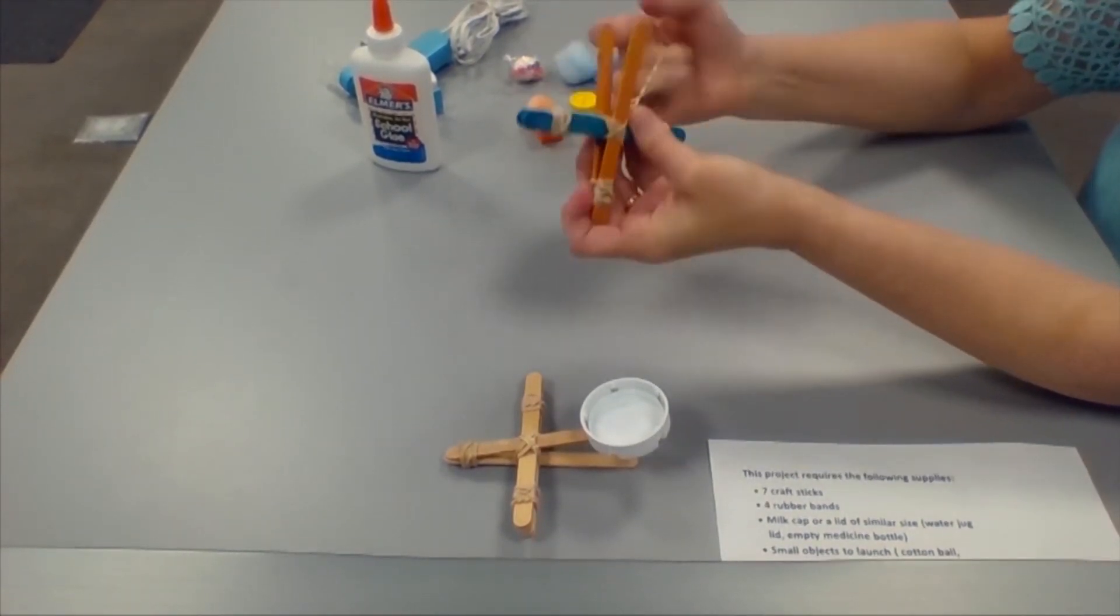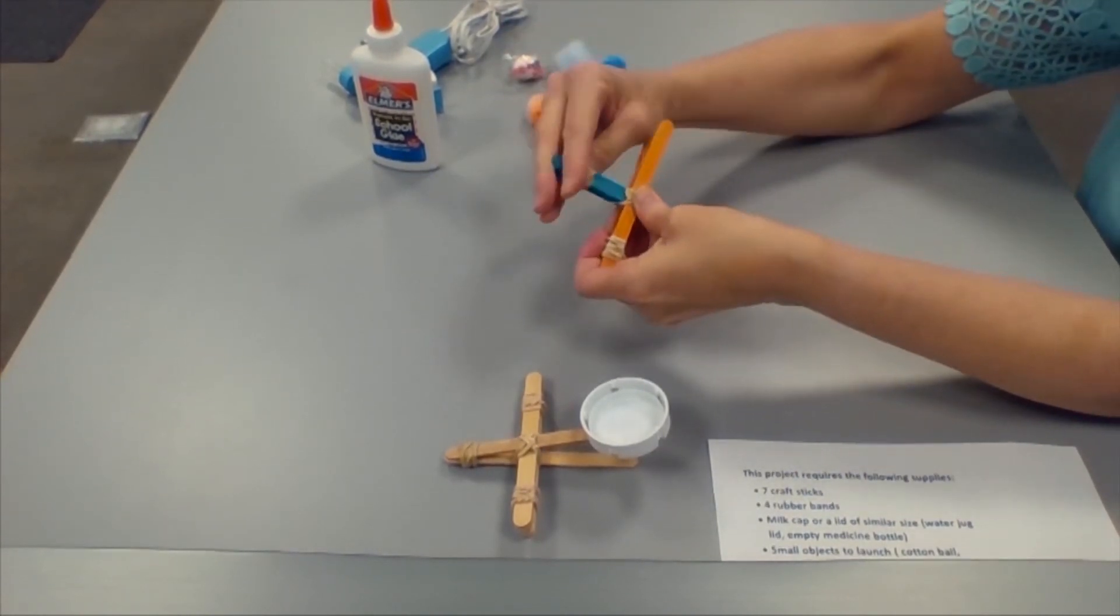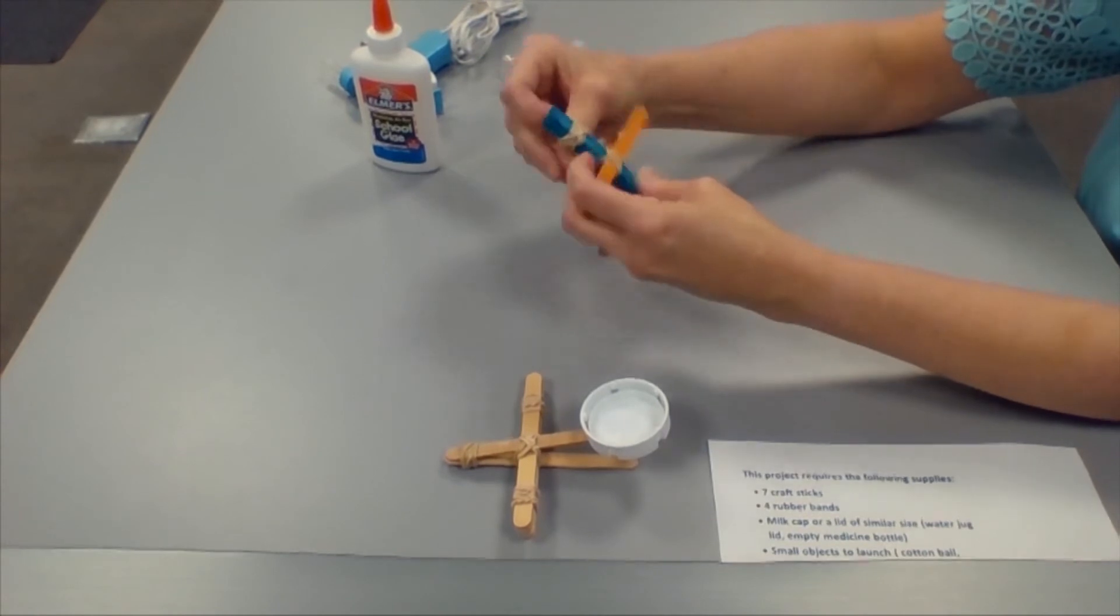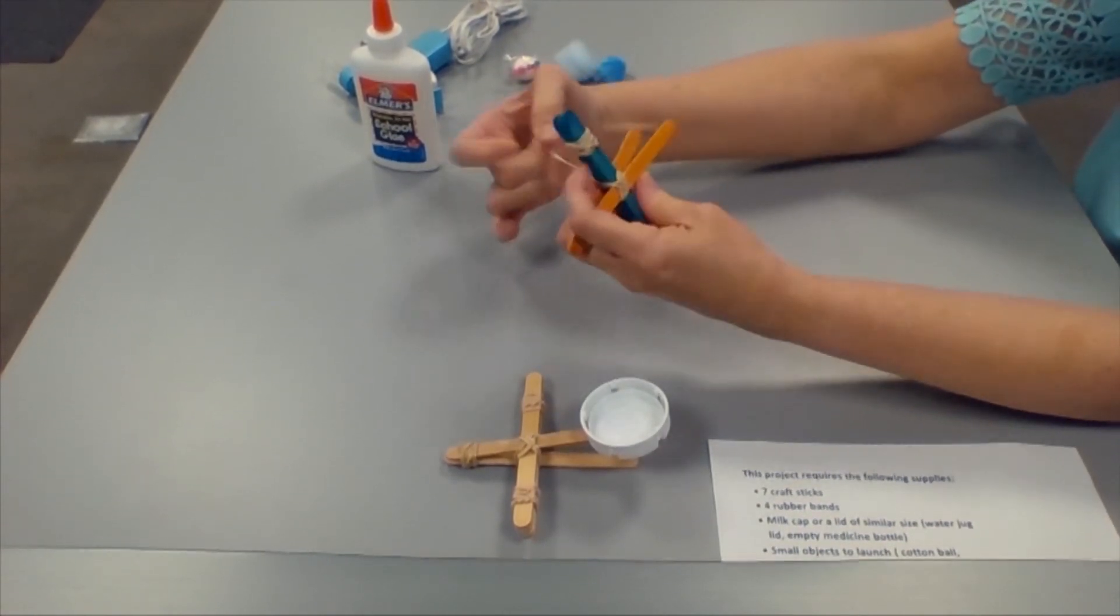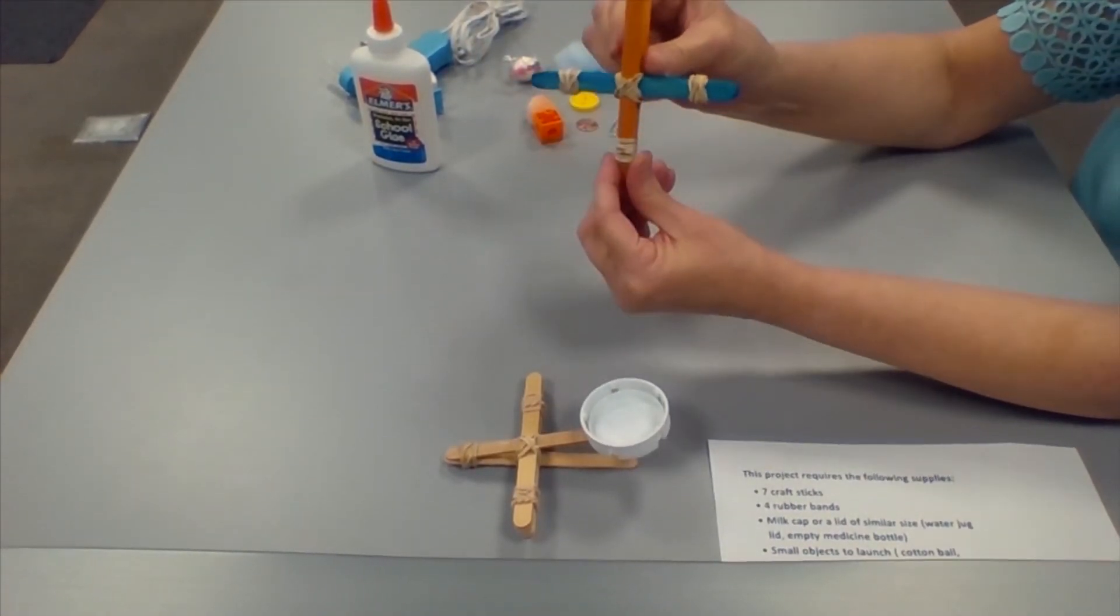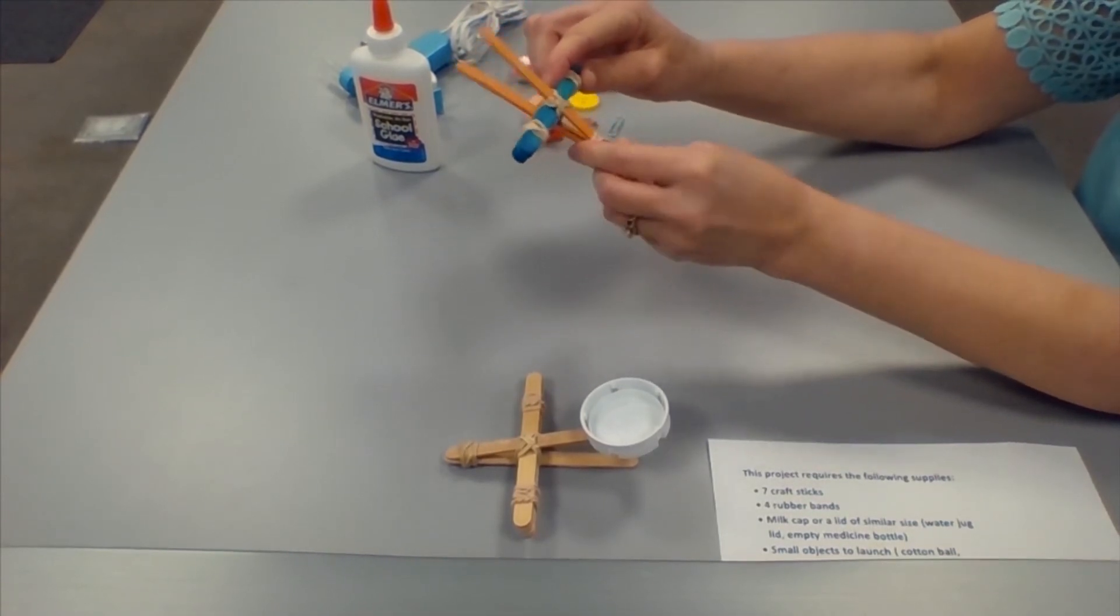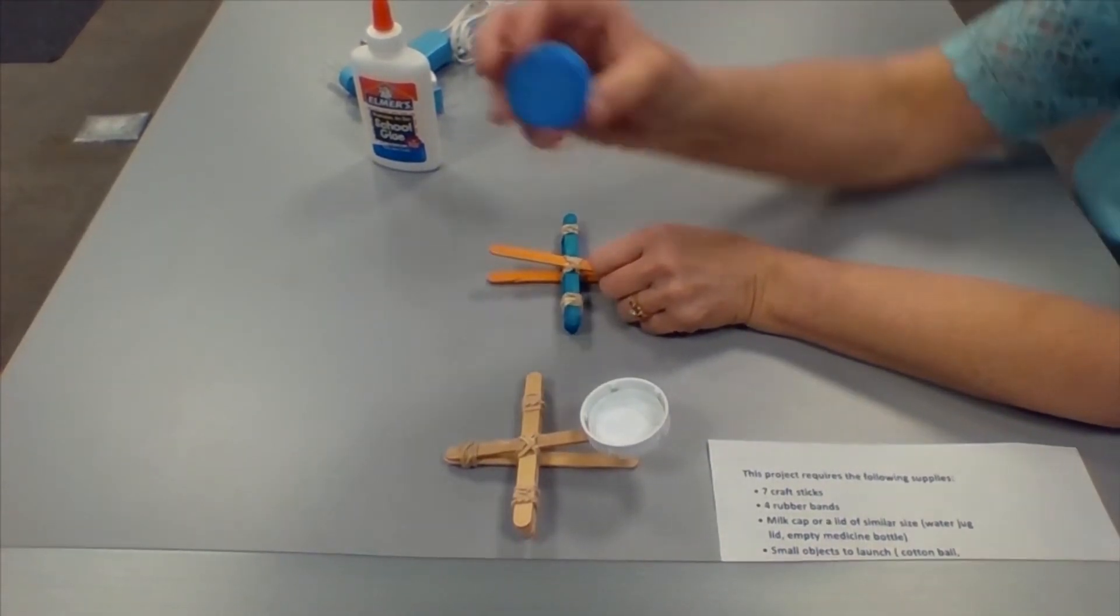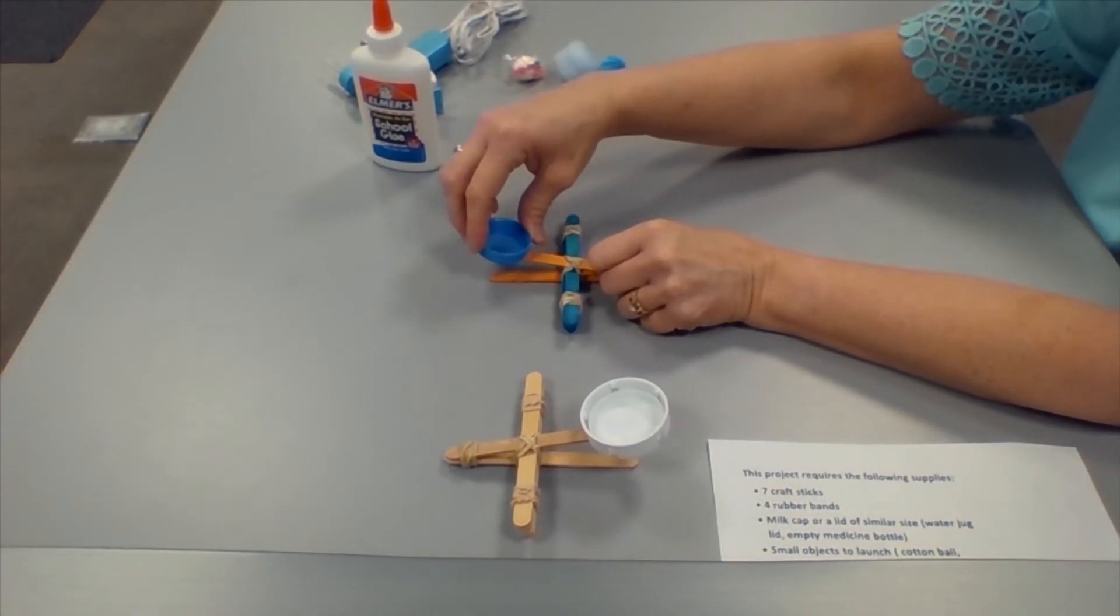The first reaction is the acid-base reaction. When vinegar and baking soda are first mixed together, hydrogen ions in the vinegar react with the sodium and bicarbonate ions in the baking soda. The result of this initial reaction is two new chemicals: carbonic acid and sodium acetate.